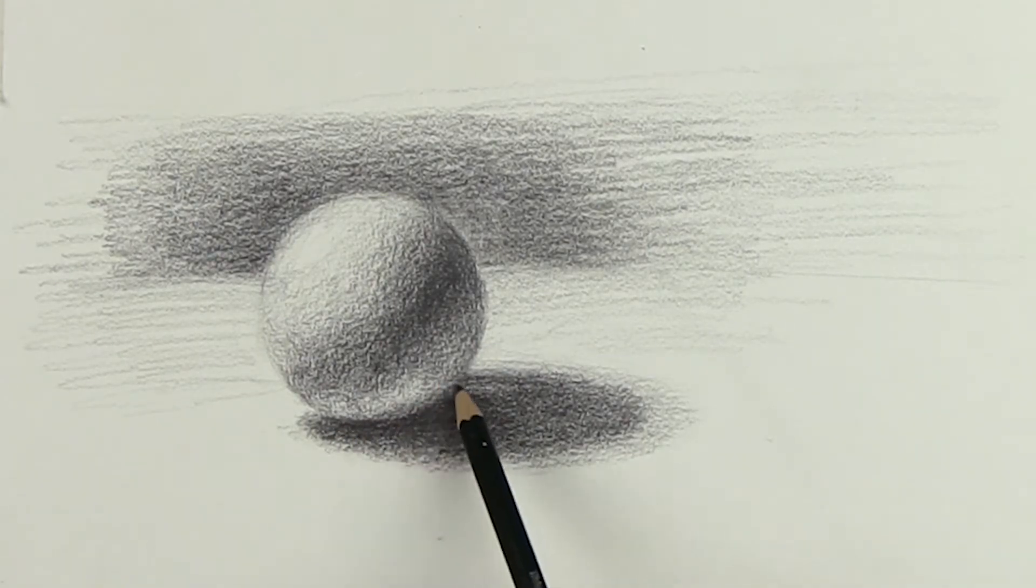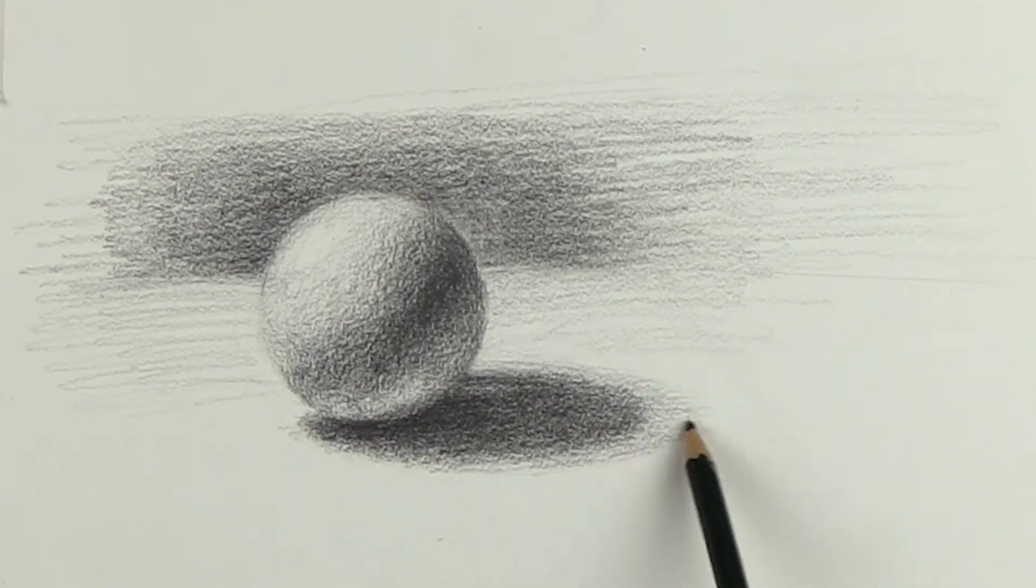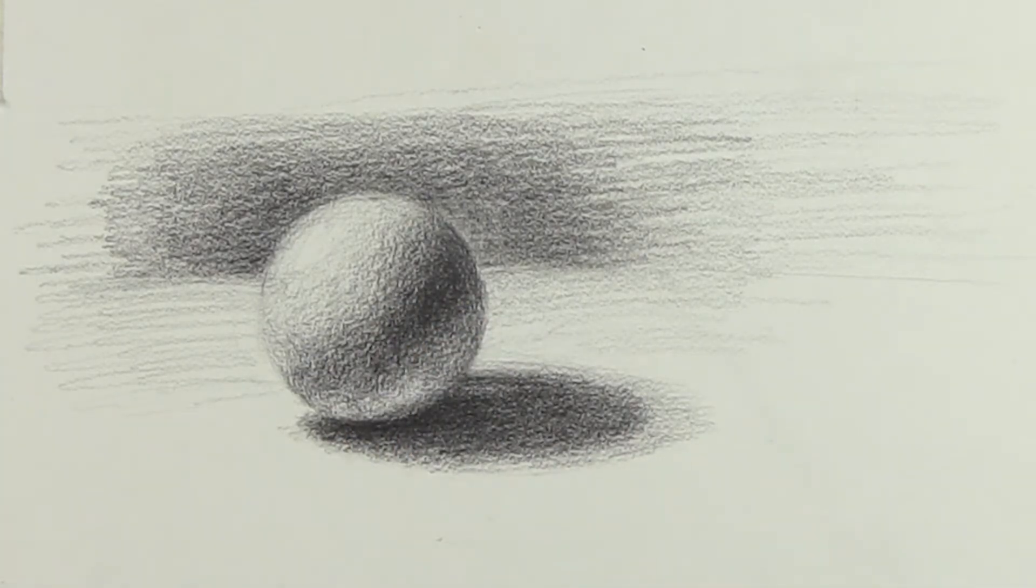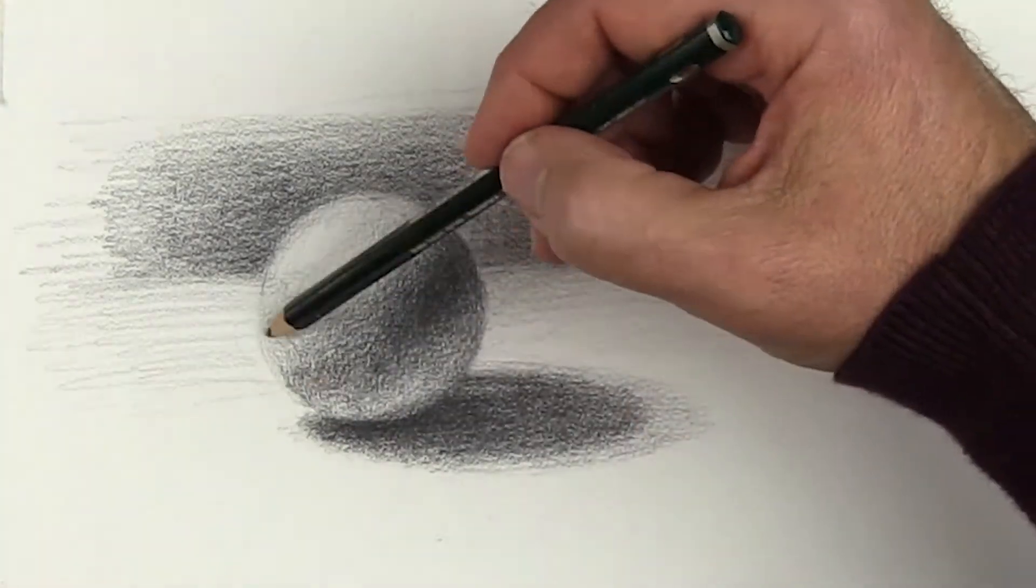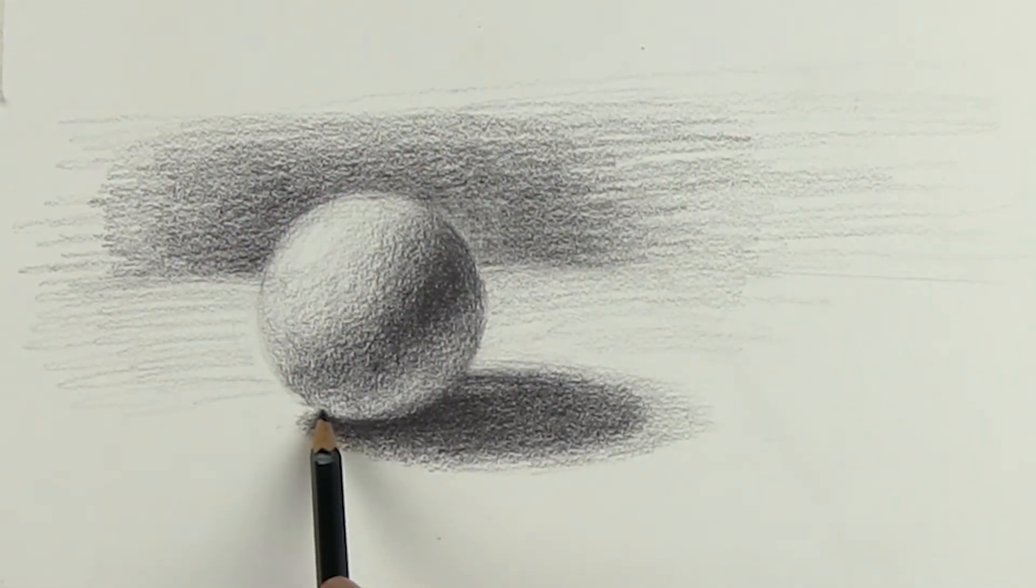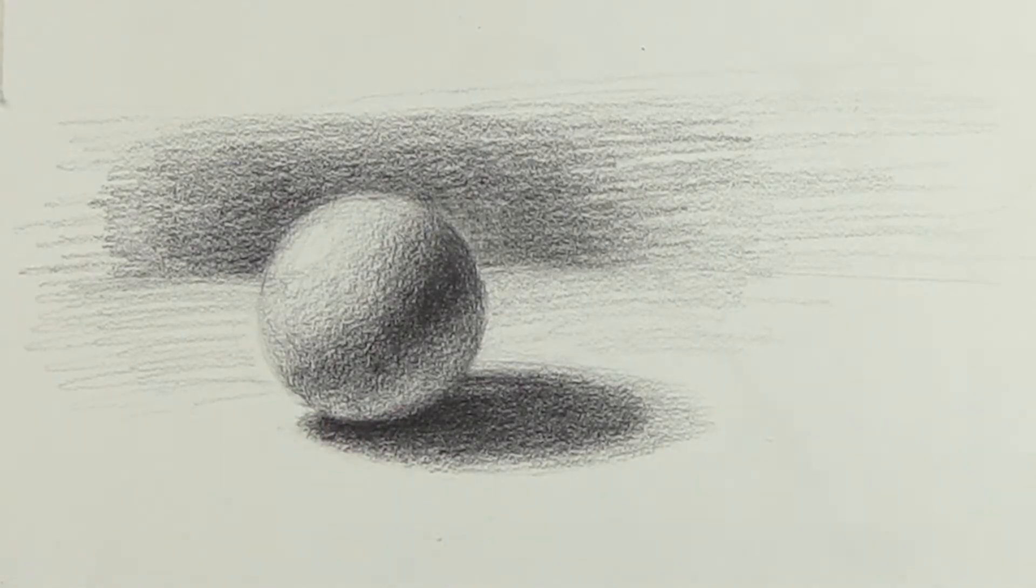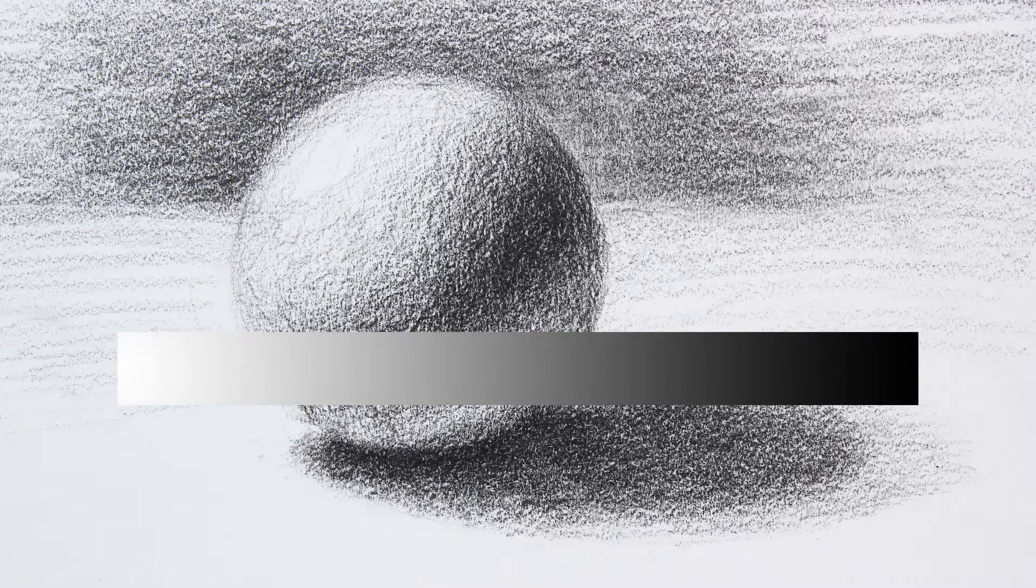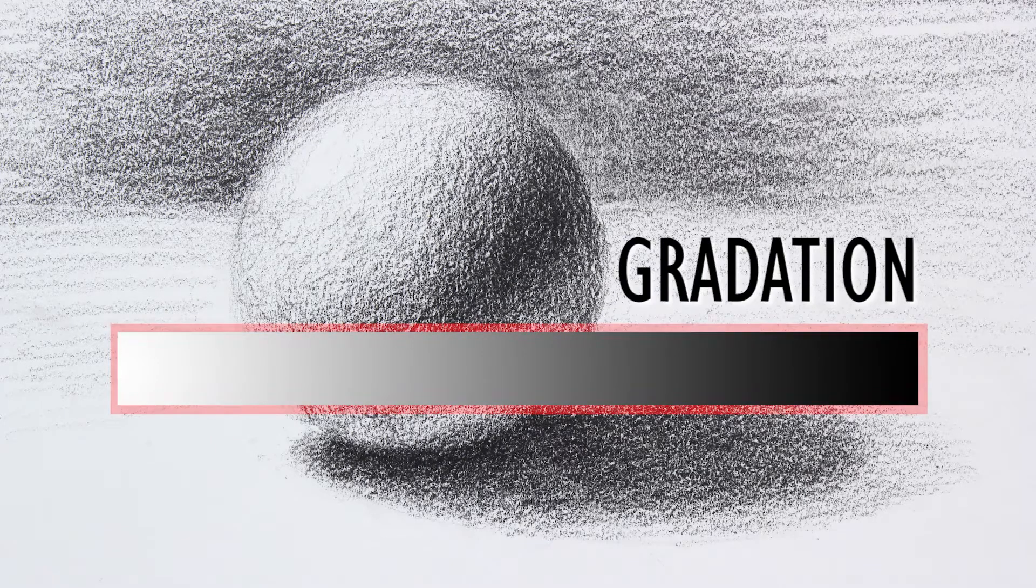One of the main differences between the cube and the sphere is there are no distinct planar values on the sphere. It doesn't have corners or edges within the form where the value changes abruptly. All the value changes are soft or gradual. This soft or gradual value change is called gradation, and it's one important key for making surfaces look rounded.